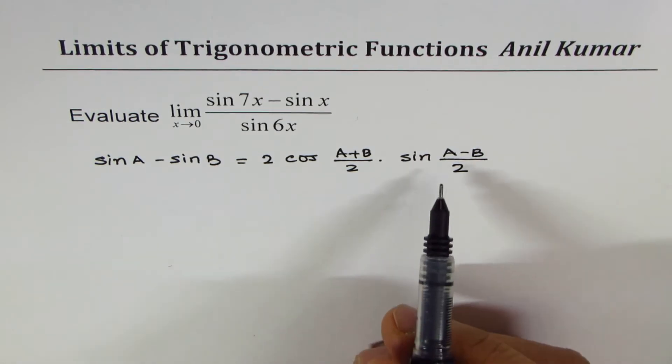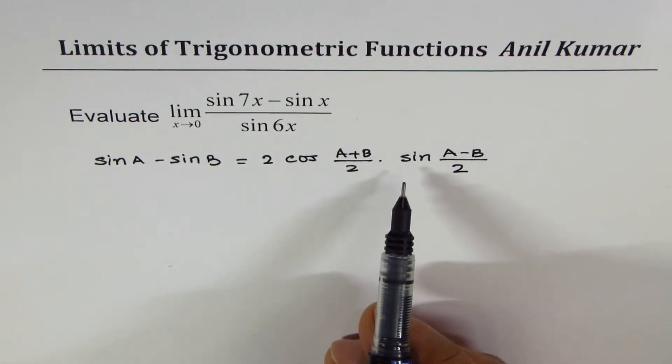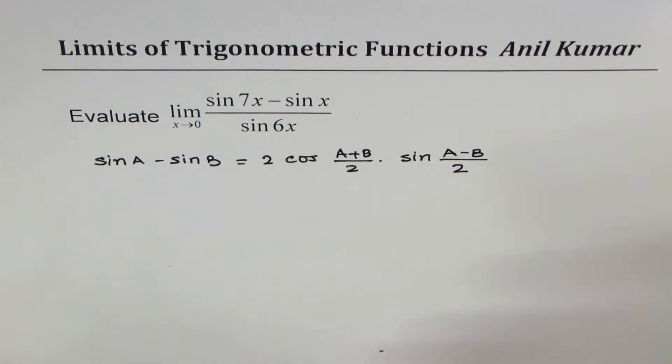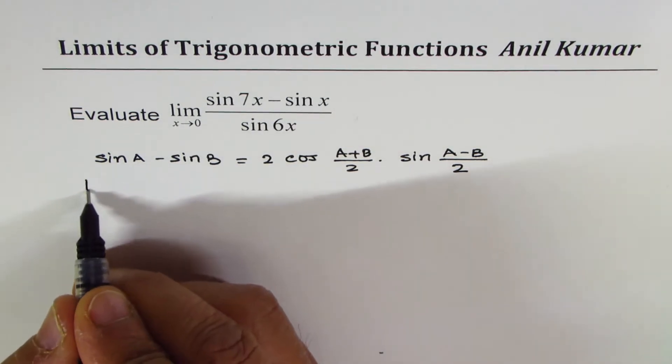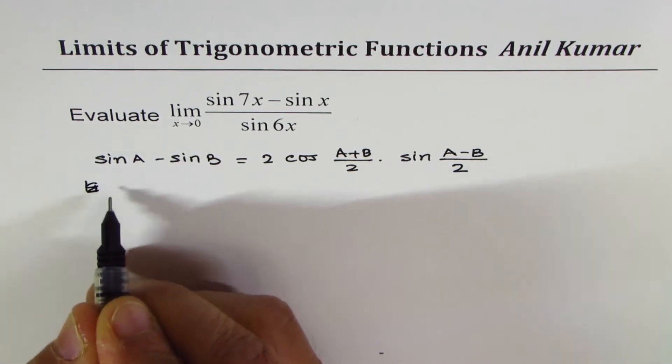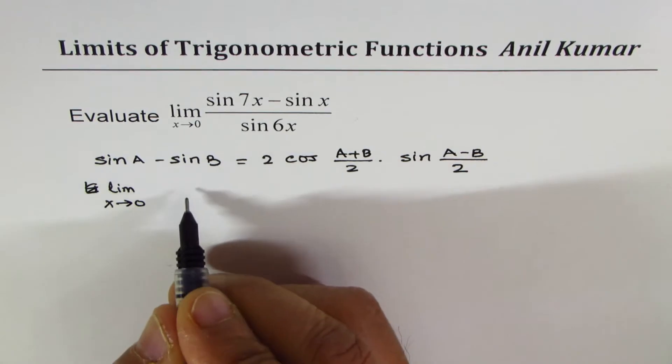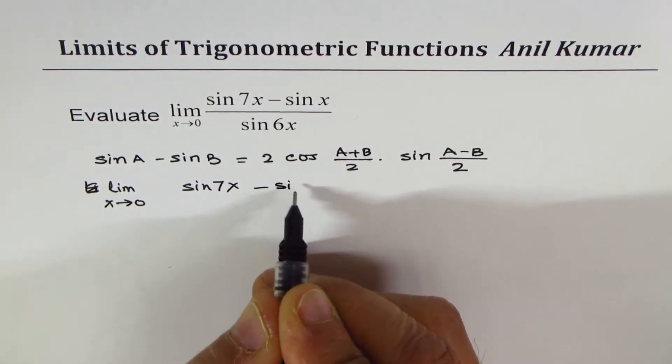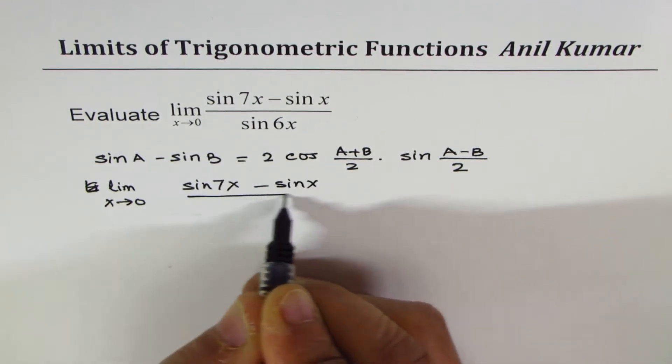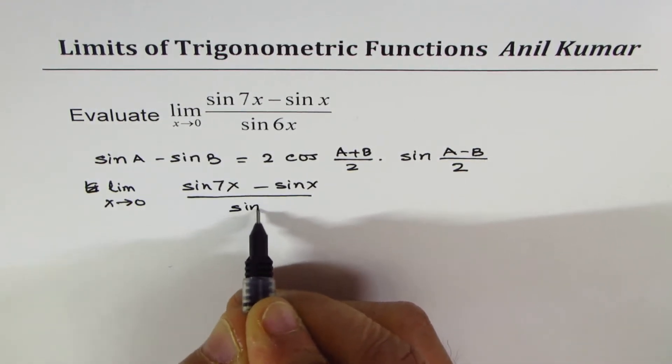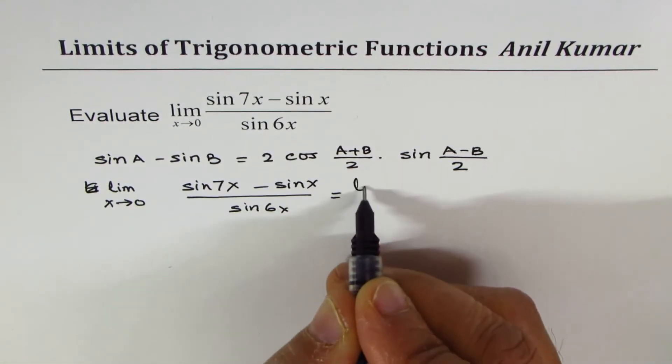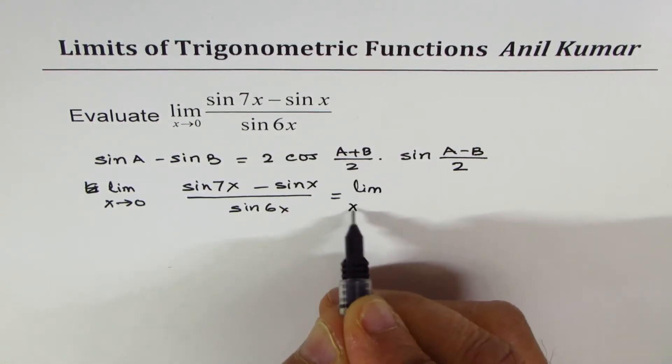I'll provide you with a link where we have proved this identity. It is a standard identity which can always be used. Applying this, we can rewrite the question as limit x approaches 0, sine 7x minus sine x over sine 6x.